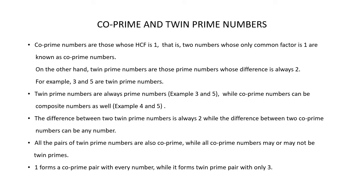Let's understand the differences between co-prime numbers and twin prime numbers. Co-prime numbers are those numbers whose HCF is 1. On the other hand, twin prime numbers are those prime numbers whose difference is always 2. For example, 3 and 5 are twin prime numbers and their difference is 2. Twin prime numbers are always prime numbers, while co-prime numbers can be composite numbers as well.